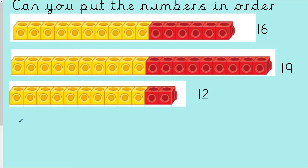Moving on to today's main topic: comparing and ordering numbers. Here I have 3 sets of cubes. I would like you to order the numbers from smallest to largest. Please pause the video here and have a go. Our numbers are 16, 19, and 12. Let's take a closer look: in 16 we have 1 ten and 6 ones; in 19 we have 1 ten and 9 ones; in 12 we have 1 ten and 2 ones.